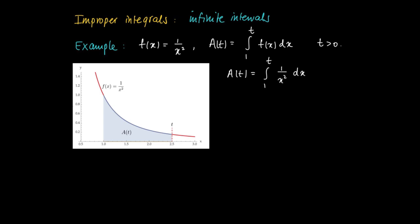Since we have a simple function, we can actually calculate A(t). A(t) is the definite integral from 1 to t of 1 over x squared dx. And 1 over x squared has as primitive minus 1 over x. So we may calculate A(t) as 1 minus 1 over t.